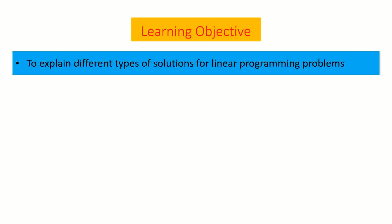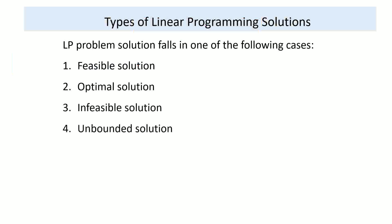Linear programming problems may have different solutions. We will see each of the solutions that we'll encounter in solving a linear programming problem. The types of linear programming solutions may be categorized into four types: the feasible solution, the optimal solution, infeasible solution, and unbounded solution. When we are solving linear programming, we may encounter one of these solutions ultimately.